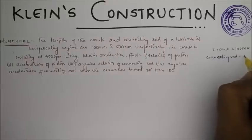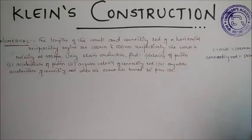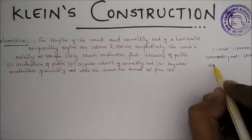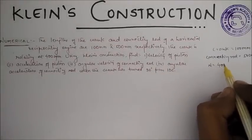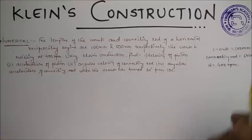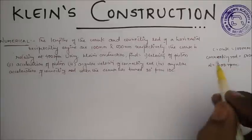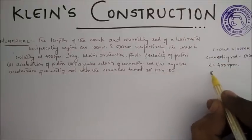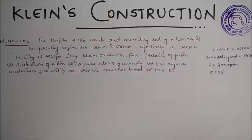rod is given as 500 mm. The crank is rotating at n given as 400 rpm and has turned 30 degrees from inner dead center, so angle theta is 30 degrees. So first